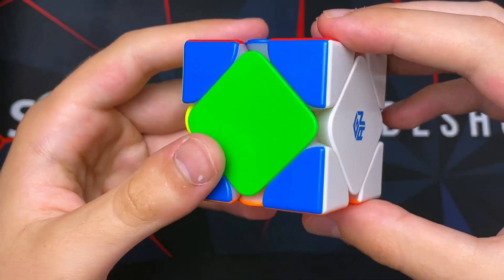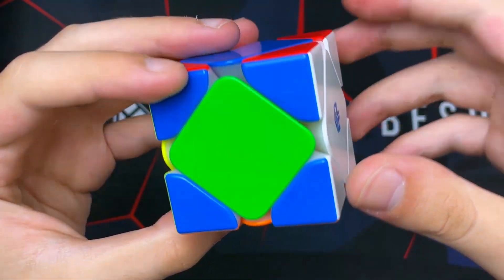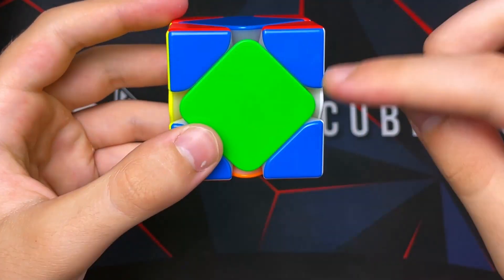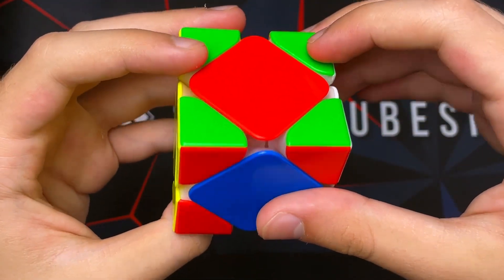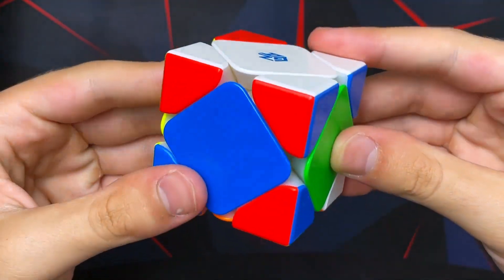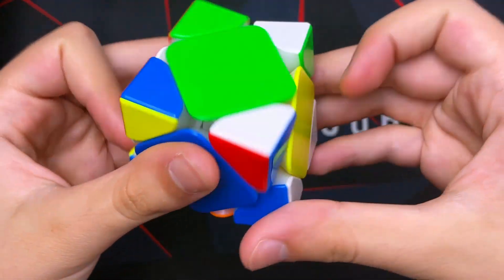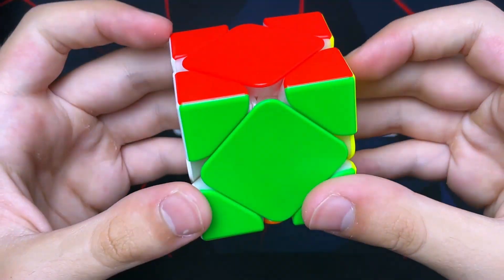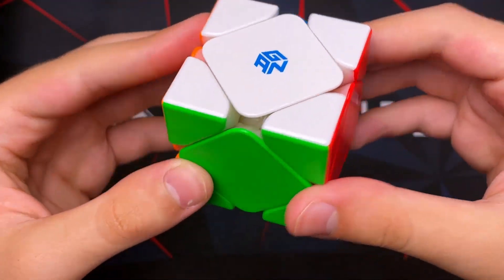From here you just hold the solved one on bottom and then the one that's opposite facing you. So green is opposite of blue. This one is not the opposite one, so it's this one. You hold it towards you and then you do the alg again, and the cube is solved.